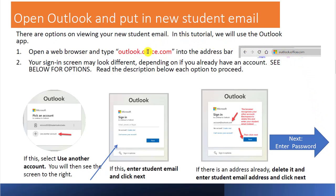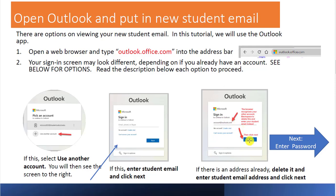Next, go to Outlook.office.com and use that student email. Open Outlook.office.com in any web browser. The sign-in screen may look different. If your sign-in screen shows an existing account, tap on Use Another Account. If your screen just shows the email field, tap in your student email address and click Next. If there's already an address in the field, delete it, put in your student email address, and then select Next.